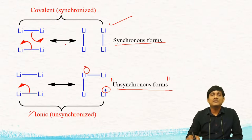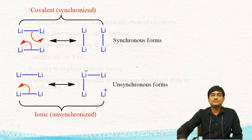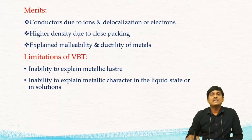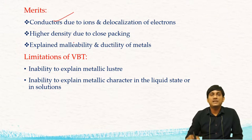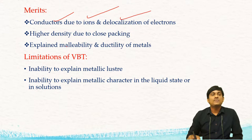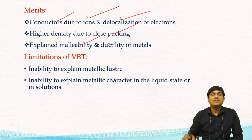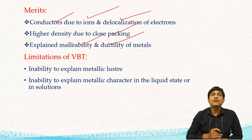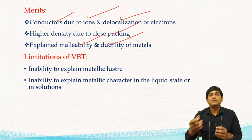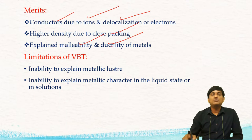The complete structure of lithium metal is a hybrid of both synchronous and unsynchronous forms. Using valency bond theory, you can explain some properties of metals. The conductivity of metals is due to having ions and also delocalization of electrons. The property of higher density is due to close packing. The theory also explains malleability and ductility — when stress is applied, there is a rolling of layers of metals without breaking of bonds, which is why metals are malleable and ductile.